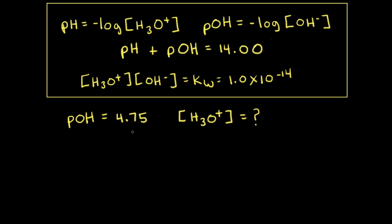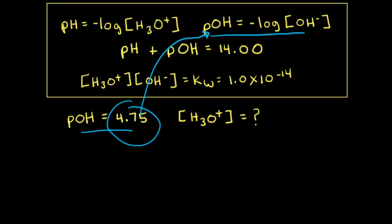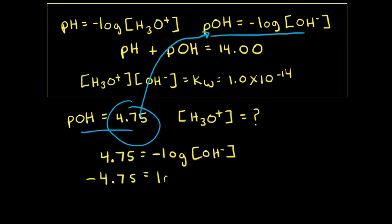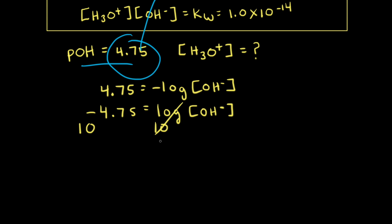There's another way to do the same problem. Since we have the pOH, we could use the pOH equation to find the concentration of hydroxide ions in solution. Plugging in the pOH gives us 4.75 is equal to the negative log of the concentration of hydroxide ions. Moving the negative sign to the left side gives negative 4.75 equals the log of the concentration of hydroxide ions. Taking 10 to both sides, 10 to the negative 4.75 equals 1.8 times 10 to the negative 5th, so the concentration of hydroxide ions is 1.8 times 10 to the negative 5th molar.